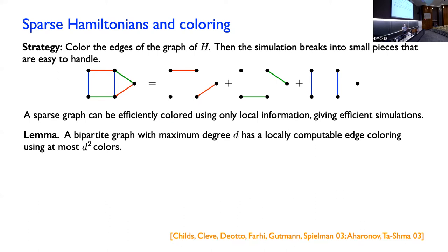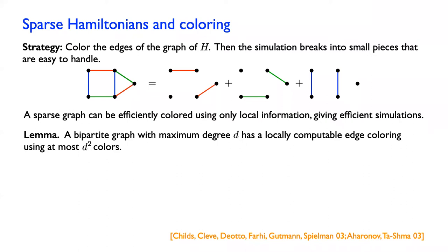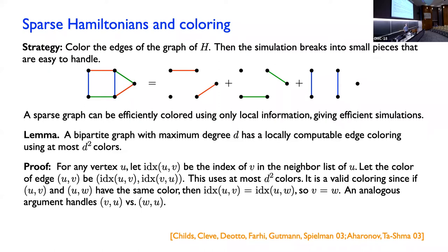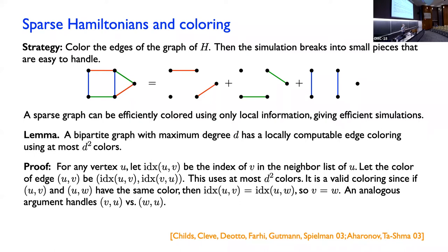Here's a nice simple fact. If I have a bipartite graph — a graph where I can divide the vertices into two parts such that edges only go across the bipartition — and if it has maximum degree d, then I can come up with an edge coloring that uses only d² colors, and I can compute what that color is using only local information. I'll write idx(u,v) to mean the index of v in the neighbor list of u. That's exactly the kind of information I can get from this sparse Hamiltonian representation.